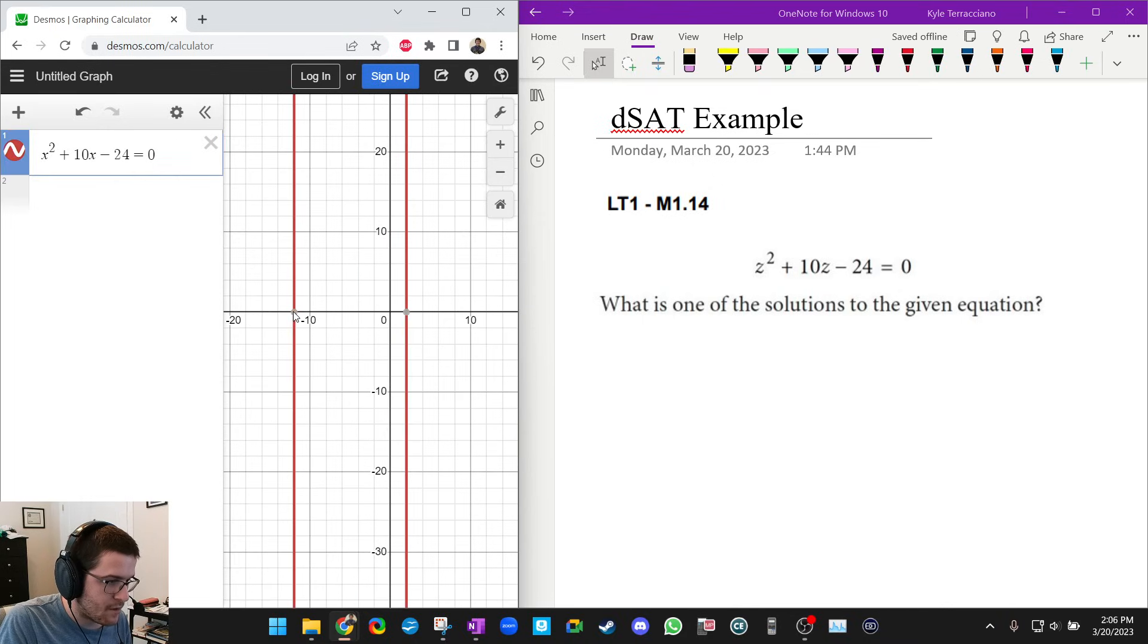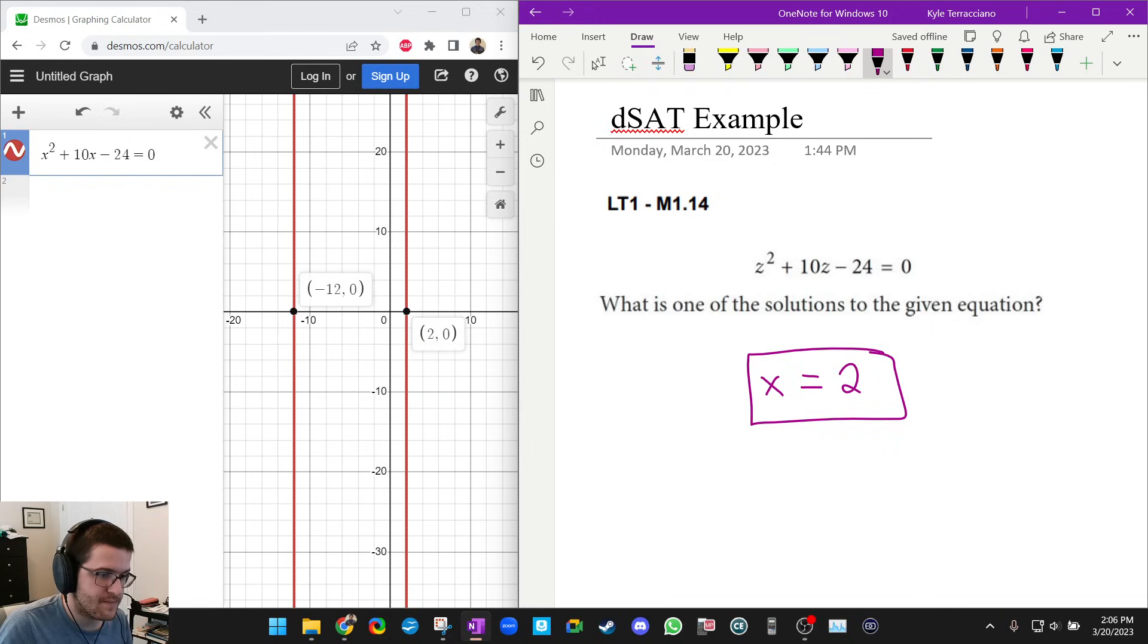And okay, I click where it crosses the x-axis. And the solutions are negative 12 and 2. And it says to just put one of them. So why don't I just put two?